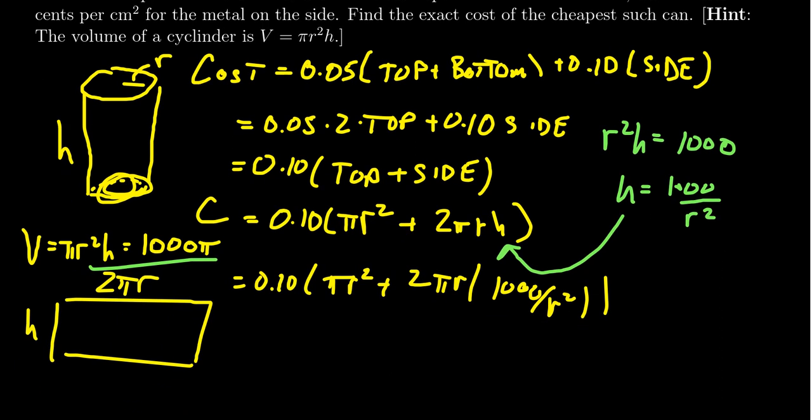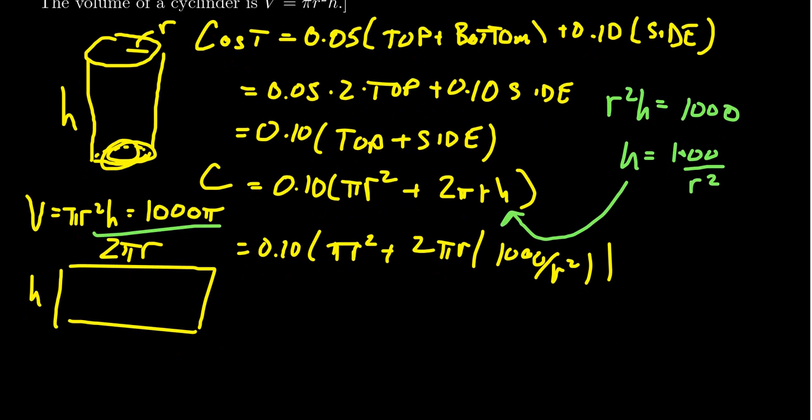We can simplify this. Factoring out π, we have r². Then 2 times 1000 is 2000, and r divided by r² is 1/r. Since we need to take the derivative soon, I'll write this as r⁻¹. So our cost function is C = 0.1π(r² + 2000r⁻¹).